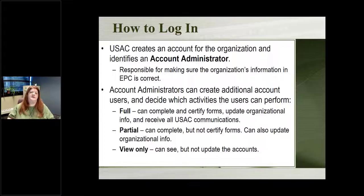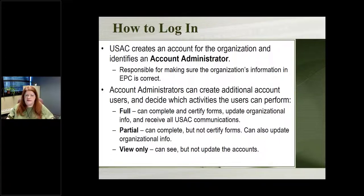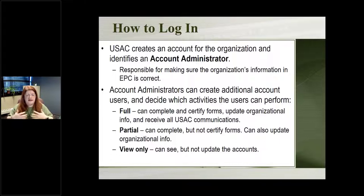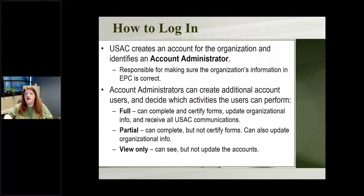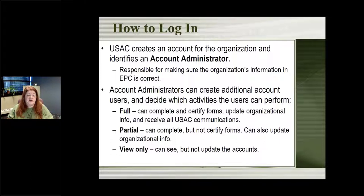There are different levels of activity you can allow someone to do. Full permissions allow you to do everything: complete forms, submit them, update anything in the organization's library account, and deal with any E-rate communications. Partial users can work on forms but can't certify them — so someone can fill out all the forms up to the point where you certify and officially submit it, and only the director can do that final step. Then there's a view-only option where someone can look at everything in there but can't update anything.